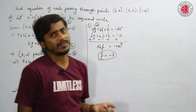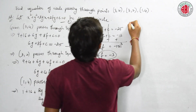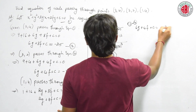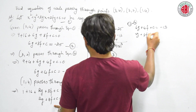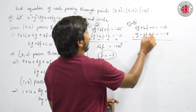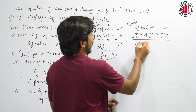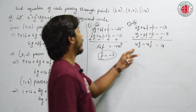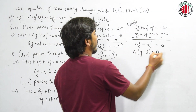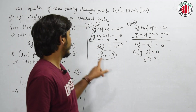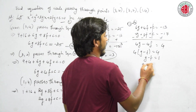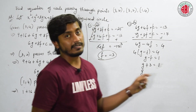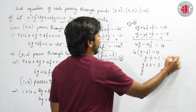We subtracted equations 2 and 3. Now let us subtract equations 3 and 4. 6g plus 4f plus c equal to minus 13, minus 2g plus 8f plus c equal to minus 17. c will cancel. 6g minus 2g is 4g, 4f minus 8f is minus 4f, and minus 13 plus 17 gives 4. Taking 4 common, I get g minus f equal to 1. Let us call this equation 5, and the earlier result f equals minus 3 as equation 6.